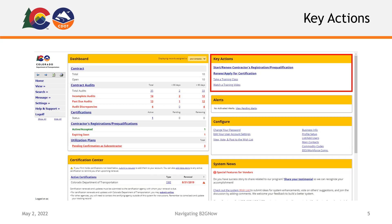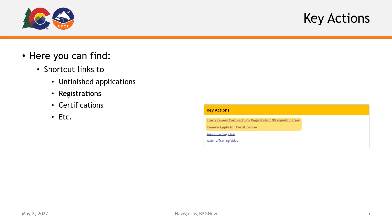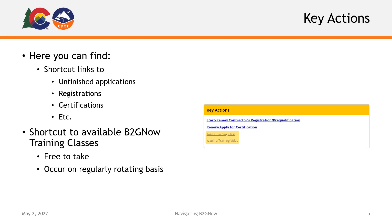On your homepage, you will also see the Key Actions section. This section is usually on the upper right of the homepage and contains shortcut links to your unfinished applications, registrations, certifications, and so forth. Here, you will also find a shortcut to a list of all available B2GNOW training classes, which are free to take and occur on a regularly rotating basis.